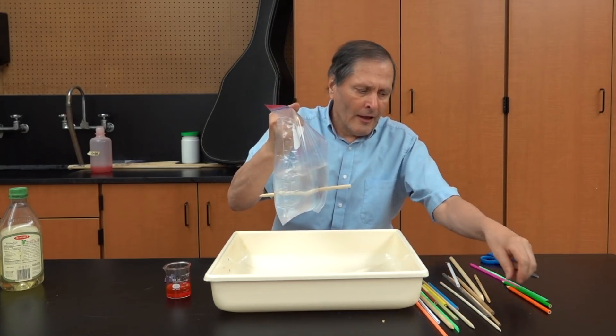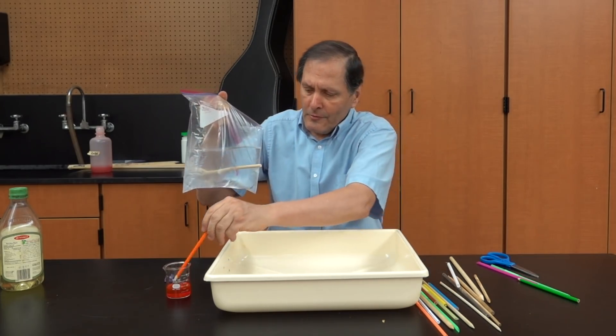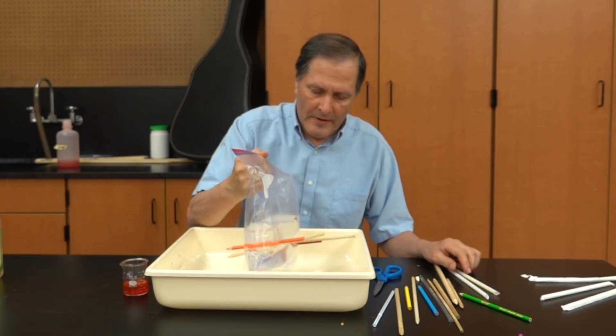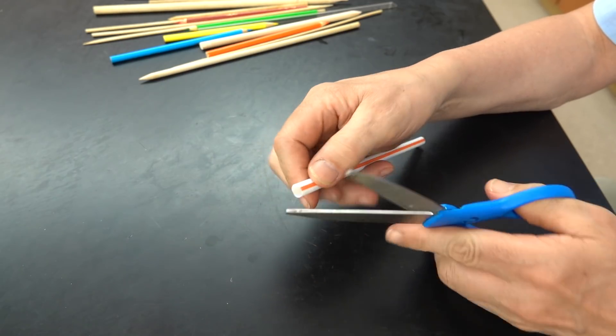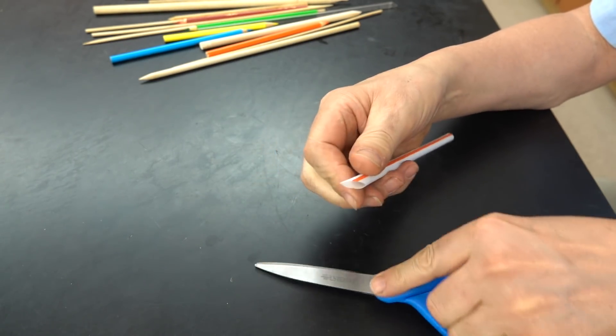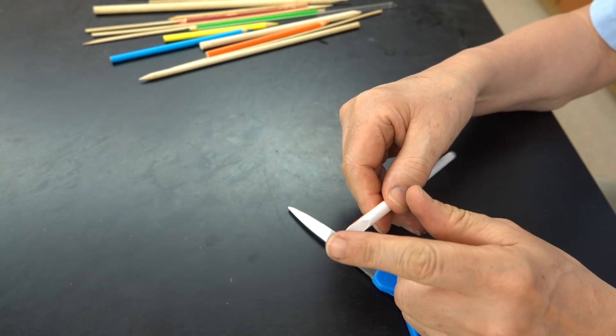We can do it with dowels, you can do it with colored pencils. Now, let's try it with a drinking straw. I'll start by cutting the one edge and giving it a sharp point.